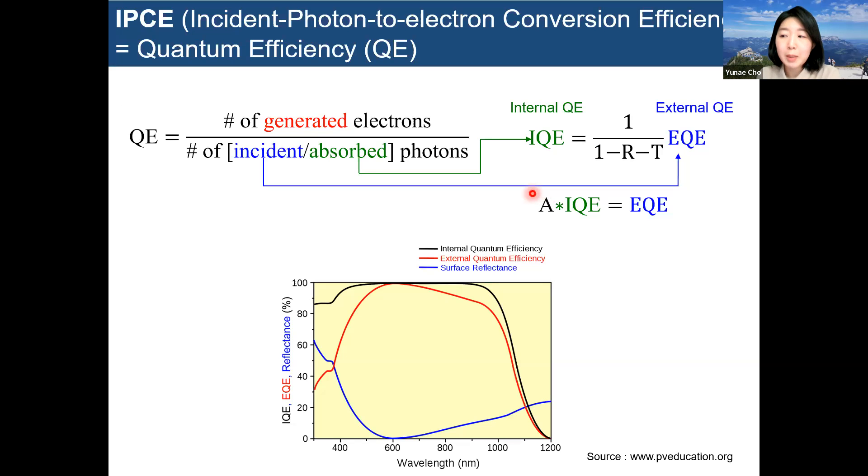First of all, IPCE is the same as the QE. It refers to the efficiency of converted electrons compared to the incident photons. Formulas are also expressed with the same definition.